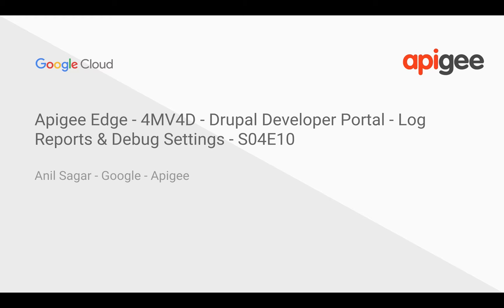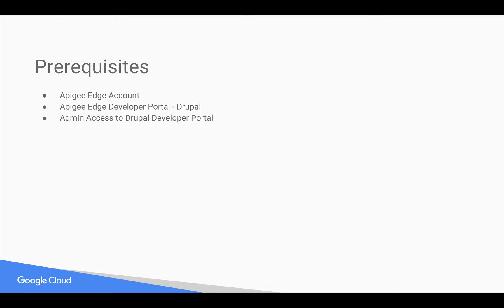Hello everyone, welcome to Apache Edge 4-minute videos for developers, developer portal series. In this video we're going to see how to debug the developer portal and access log reports. I'm Anil Sagar, I work at Google on the Apache platform. Prerequisites for this video: you need an Apache Edge account connected to the Apache Edge Drupal developer portal, with admin access to change debug settings and access log reports.